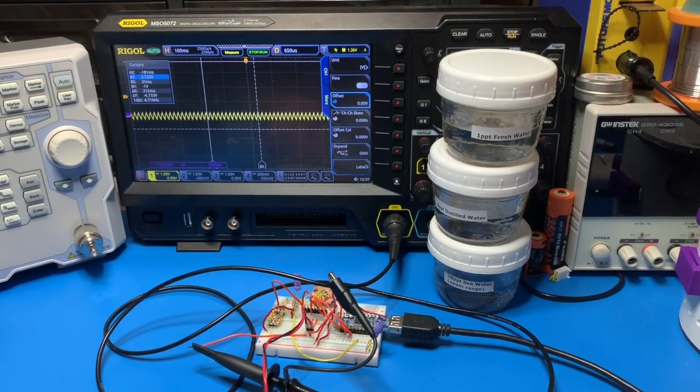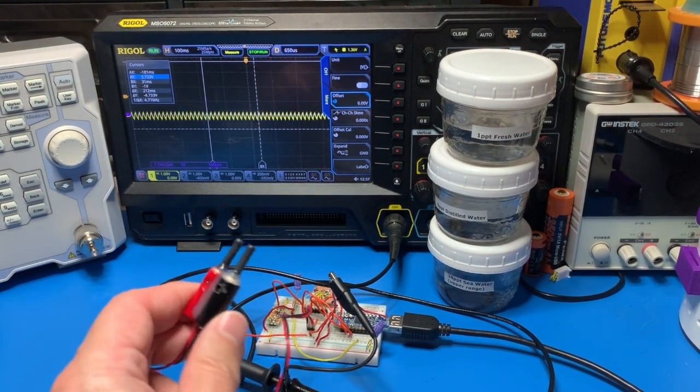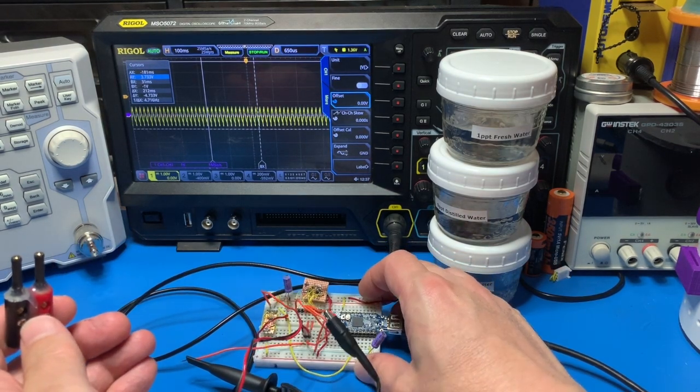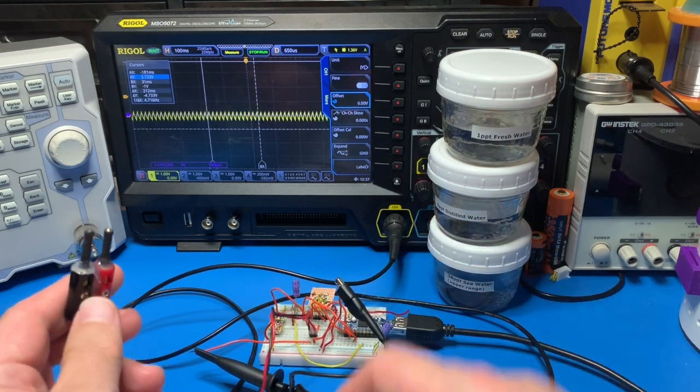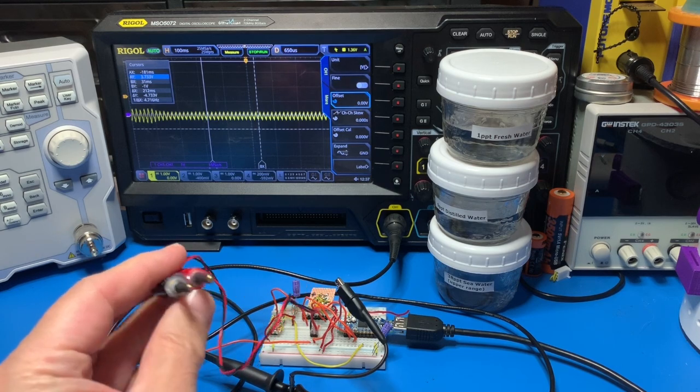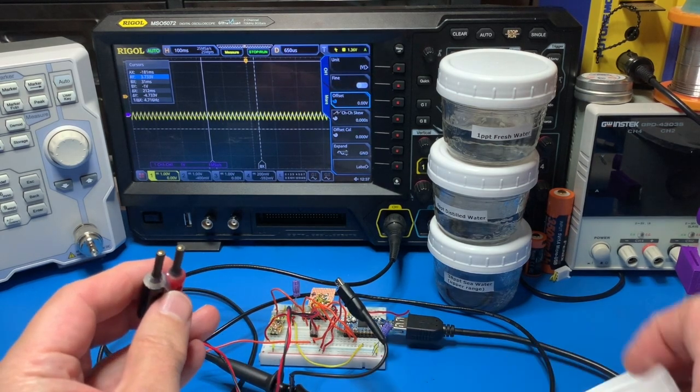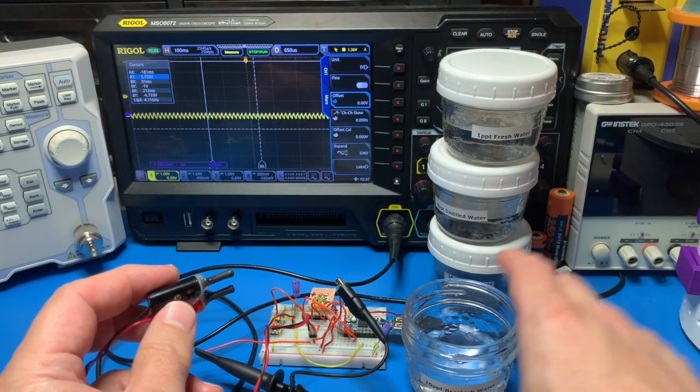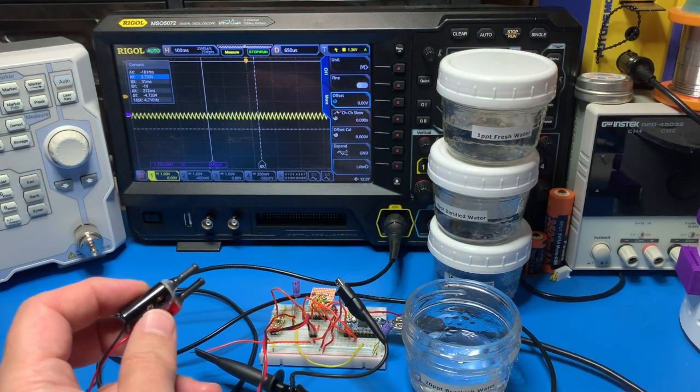So we're just going to fire up the prototype here. This isn't how it's going to look finally, but sometimes we just need to test these things first before we commit them onto a circuit board. And these are the two gold-plated electrodes I'm going to use to do the sampling, and then here's my sampling water here. So I'm just going to switch the unit on.